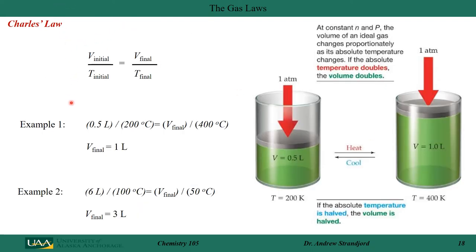Let's do some examples. In example one, if my initial volume is 0.5 liters at 200 degrees and I increase the temperature to 400 degrees, my final volume is 1 liter — it doubles. In example two, if I have 6 liters of gas at 100 degrees C and I cool it down to 50 degrees, my final volume is 3 liters.